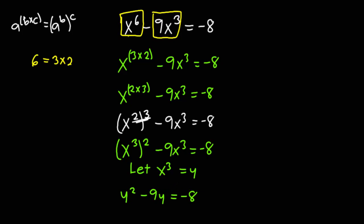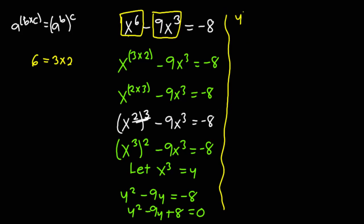Because the highest exponent is 2, this equation is quadratic, and therefore I have to express this entire equation in quadratic form. To do that, I will transfer the negative 8 to the left-hand side. So I'm going to get y squared minus 9y plus 8 equals 0.